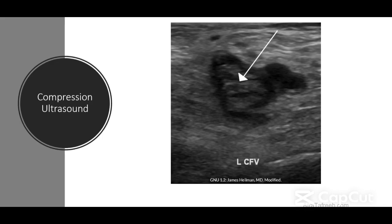Based on this convention, we can divide DVTs into proximal DVTs and distal DVTs. Proximal DVTs include those which originate in the popliteal vein, the femoral vein, and the iliac vein — essentially anything at the level of the popliteal vein or above. Notably, 90% of pulmonary emboli originate from the proximal veins of the leg, which is why, unless patients have an absolute contraindication to anticoagulation, we should anticoagulate all patients with proximal DVTs.